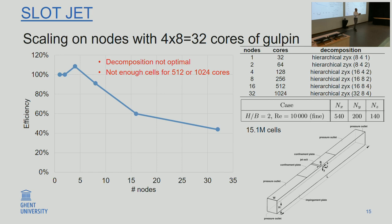The choice of decomposition was not optimal — you shouldn't put all domains next to each other. They should be more or less in a cube, as close to a cube as possible per cluster node. Another important number: with 15 million cells on 1,000 cores, you have 15,000 cells per core, which is really on the low end. There's just not enough work per core — it will mostly do communication, especially on older hardware.